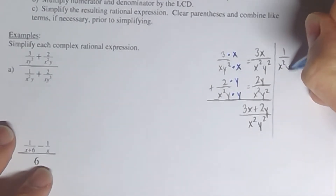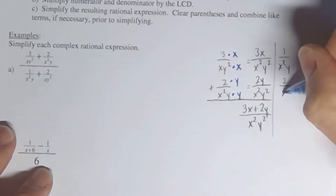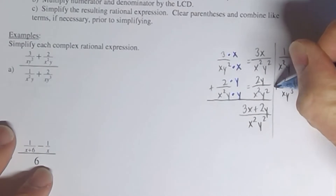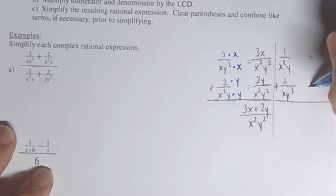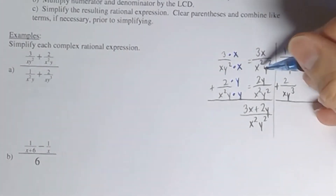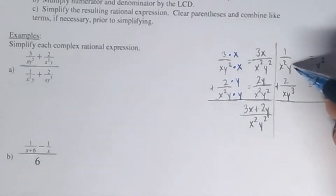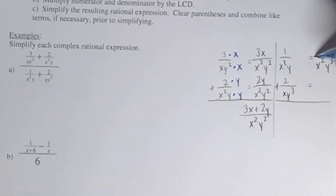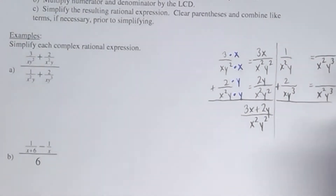So we have 1 over X squared Y and 2 over XY to the third, and we have to add those together. Just like in the previous part, you take the largest exponent of each different variable. For X squared and X, it's going to be X squared. For Y and Y to the third, it's going to be Y to the third — the largest exponent of each one. So that's the LCD: X squared Y to the third.